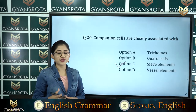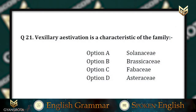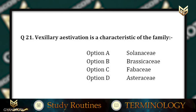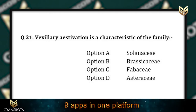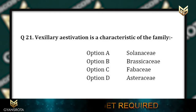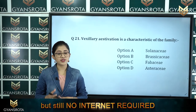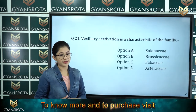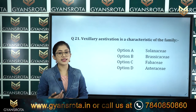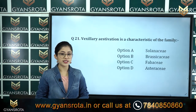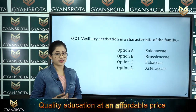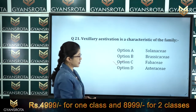Question number 21: Vexillary aestivation is a characteristic of the family — option A Solanaceae, option B Brassicaceae, option C Fabaceae, option D Asteraceae. This is from the chapter Morphology of Flowering Plants. Among these families, vexillary aestivation is a characteristic of Fabaceae, so option C is the correct answer.